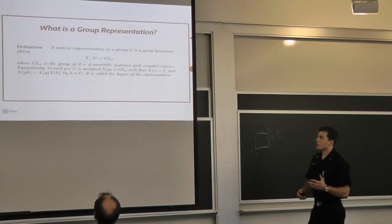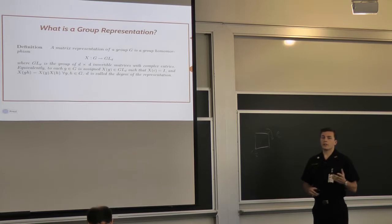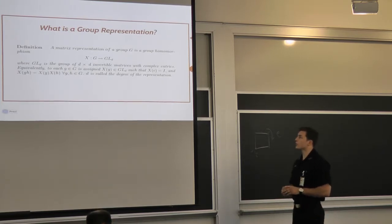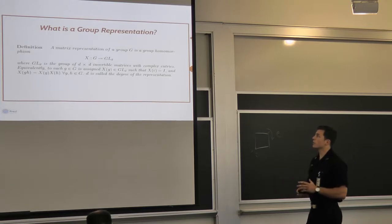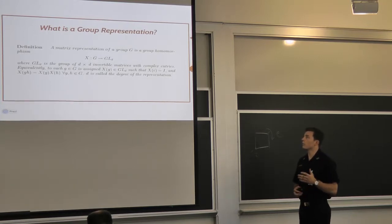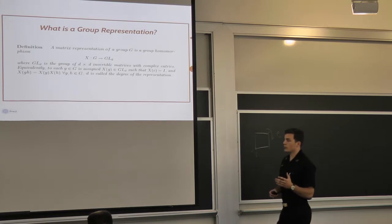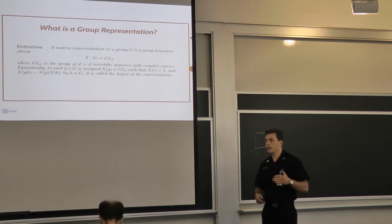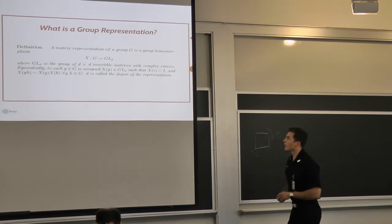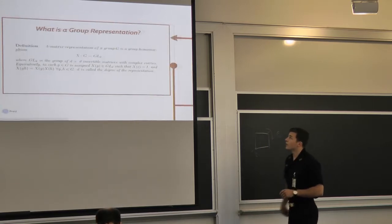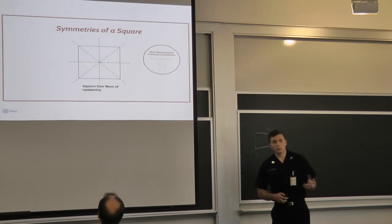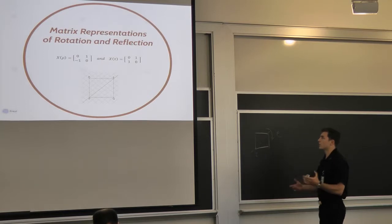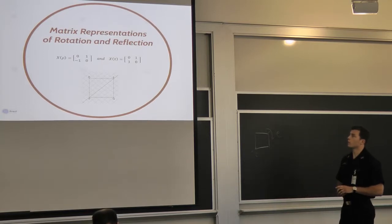So since the project is about group representations, what exactly is a group representation? We actually think about it in terms of it being a matrix representation. So it's a matrix representation of a group G, which is a homomorphism. Essentially what you're doing is you're taking elements of your group and you're assigning matrices to those different elements. So again, go back to the example of symmetries of a square where we have rho and tau. We consider the matrix representation of rho.